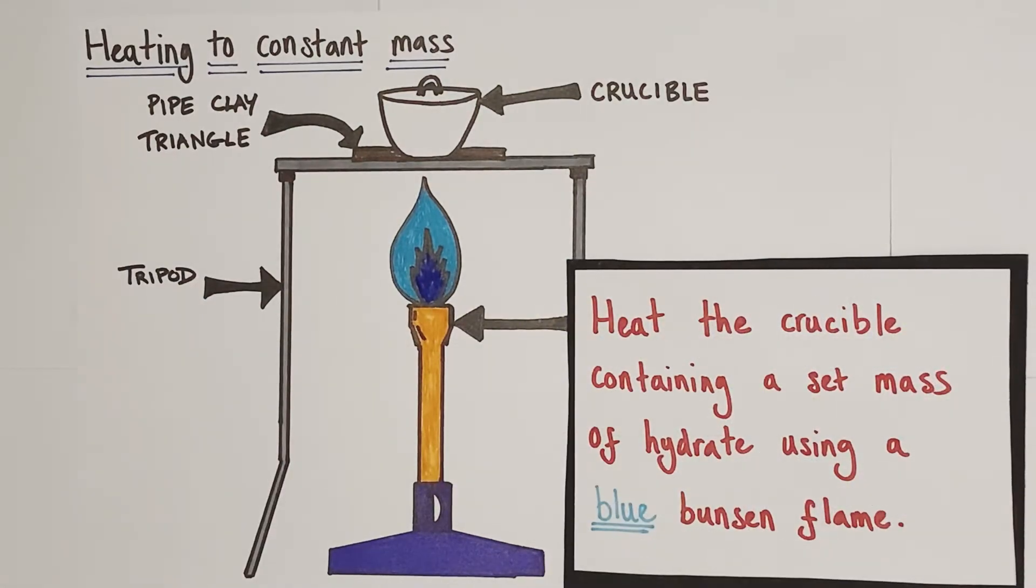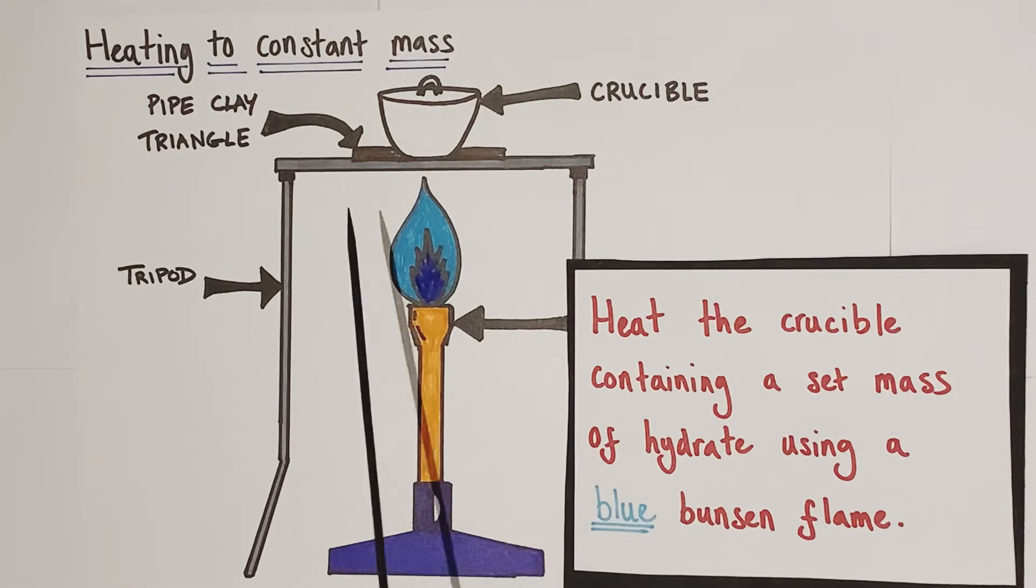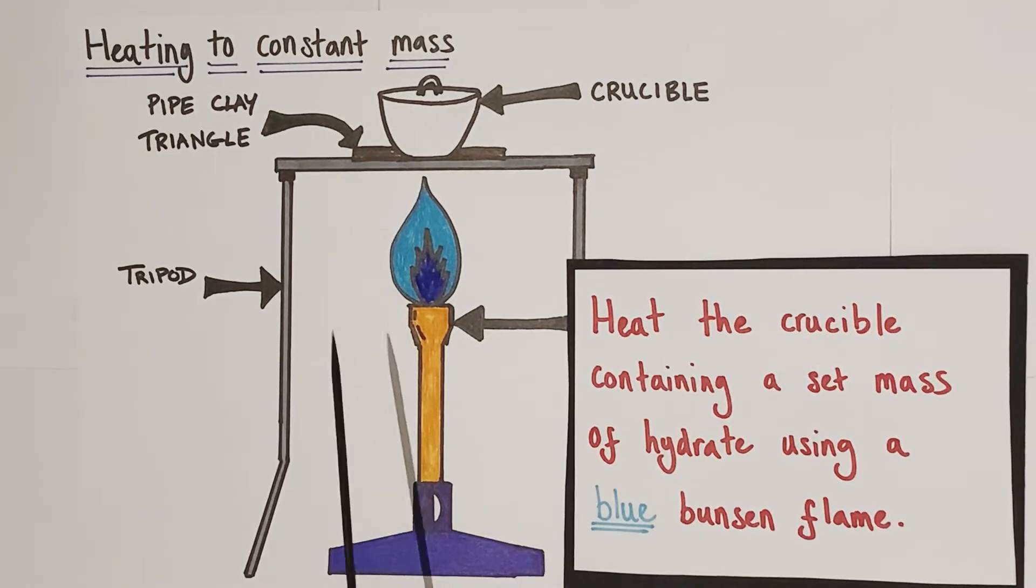Then you carefully place your crucible with its lid on top and the hydrate inside on the pipe clay triangle, light your Bunsen, turn it to a half collar to create a blue flame and begin to heat the crucible containing your set mass of hydrate using that blue Bunsen flame.